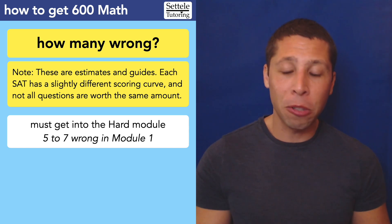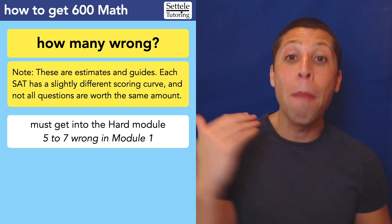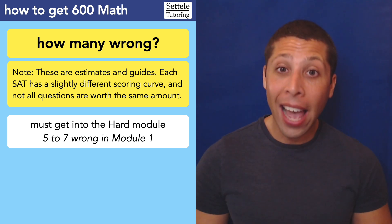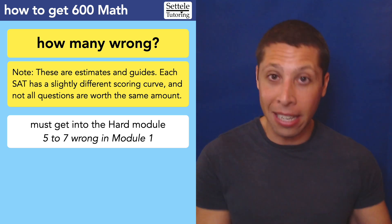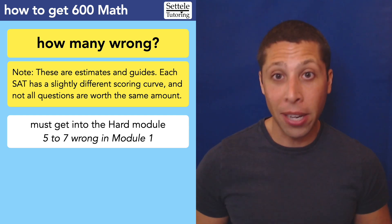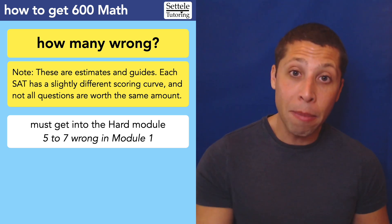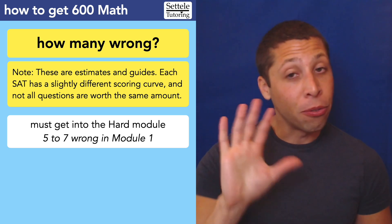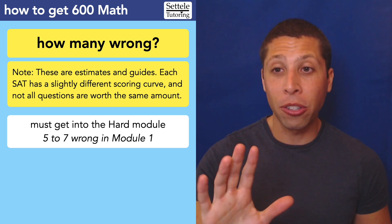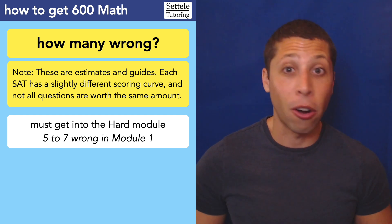is we need to make sure we are not placed in the easy second module. If we get too many wrong in the first module, they're going to put us in the easy one and that limits our score to a 600 maximum, even if we get all of the questions right in the easy module. It's very hard to get in the 600s if you're in that easy module. So, you've got to make sure you keep your errors to a minimum in the first module.